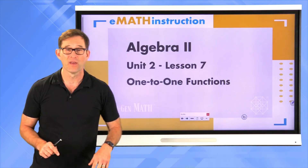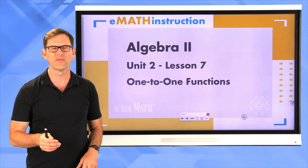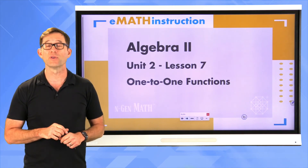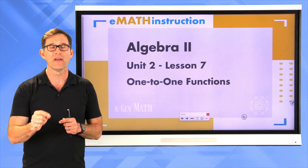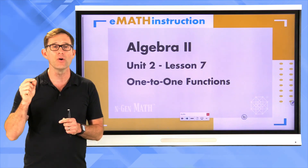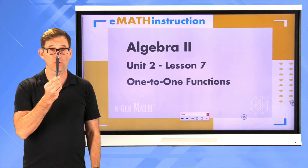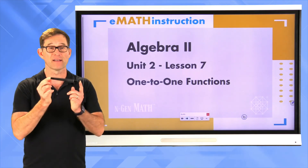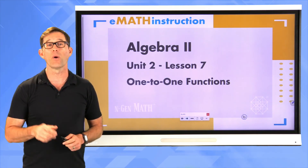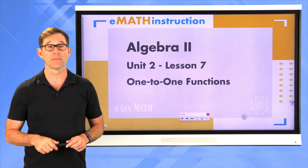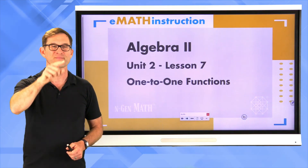In this lesson we talked about one-to-one functions. In a one-to-one function, every x value gets a unique y value — no outputs get repeated. That leads us to the horizontal line test: if a graph passes the vertical line test it's a function, and if it also passes the horizontal line test it's a one-to-one function. In our next lesson we'll explore why one-to-one functions are important. Thanks for joining me — my name is Kirk Weiler, keep thinking and keep solving problems.